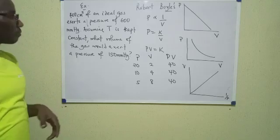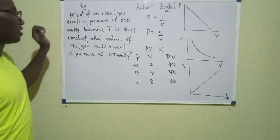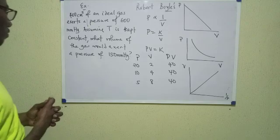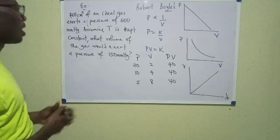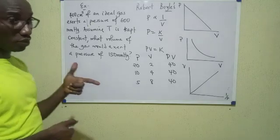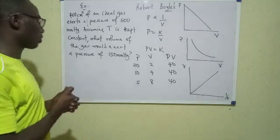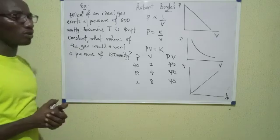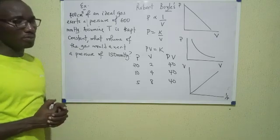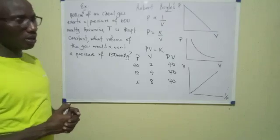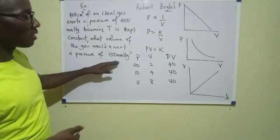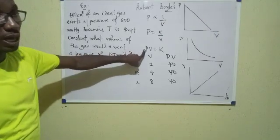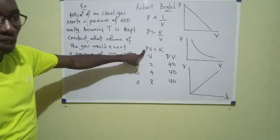Look at this question: 400 cm³ of an ideal gas exerts a pressure of 600 mmHg. Assuming temperature is kept constant, what volume of the gas would exert a pressure of 150 mmHg? To answer this question, I'll use the formula PV equals K.